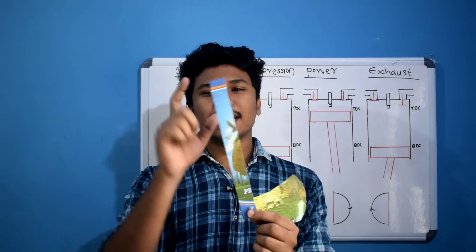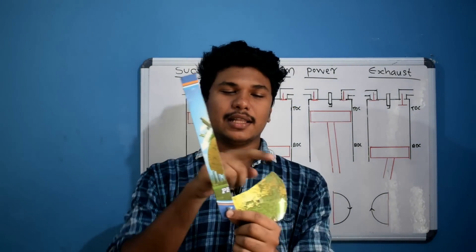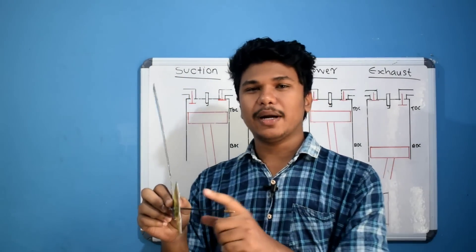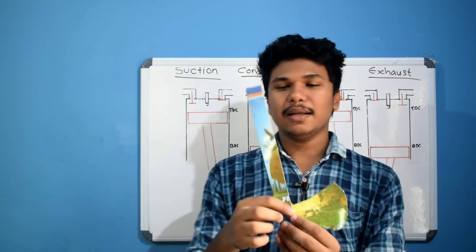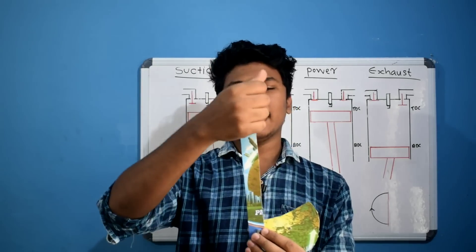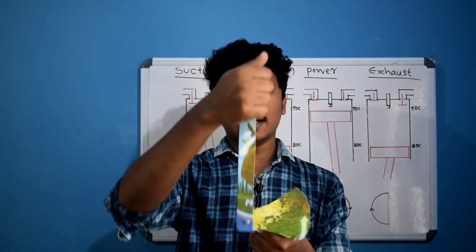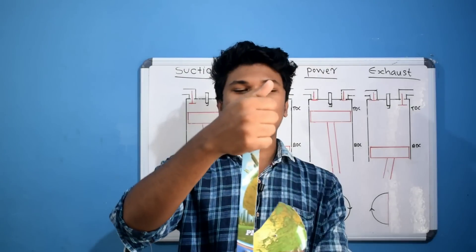This is the crank, this is the connecting rod, and this is the crankshaft. This is the piston and the piston pin. This is the reciprocating motion of the piston.